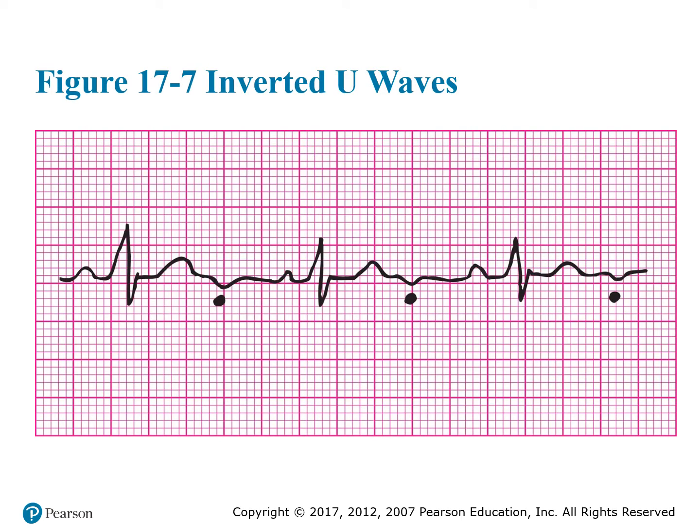Figure 17-7 shows an example of inverted U-waves that have suddenly appeared, indicated by dots placed under the U-waves. As noted, U-waves are signs of coronary ischemia. The sudden appearance of U-waves on an EKG during an exercise stress test gives indications that the patient has some form of CAD.